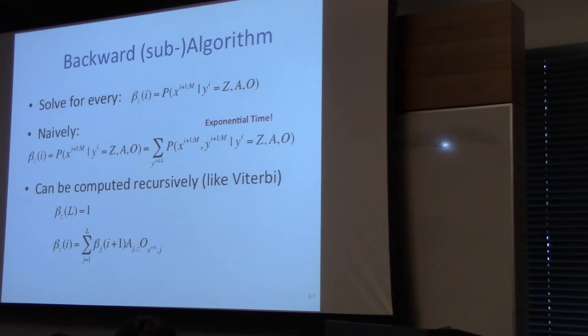The backward algorithm just deals with beta. How do you compute the beta? You just do it recursively backwards, and again, it's just this formula.